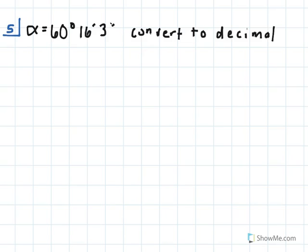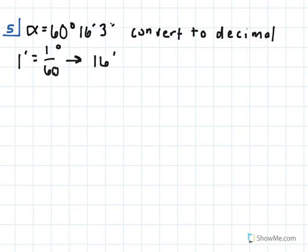Here we're given the angle measure 60 degrees, 16 minutes, and 3 seconds, and we're asked to convert this degrees-minutes-seconds form into a decimal. First, we're going to deal with converting our minutes into degrees. We know that 1 minute is equal to 1/60th of a degree. So we're going to take our 16 minutes and multiply that by 1 over 60 to get 16/60 of a degree.